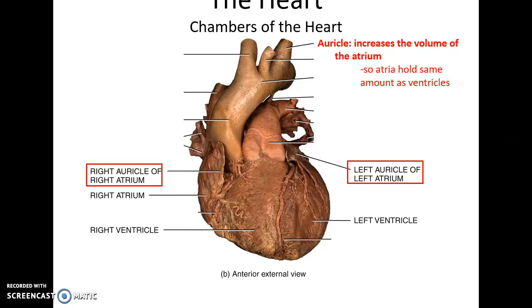Near the superior side of the heart are structures called auricles, which are basically there to increase the volume of the atria.